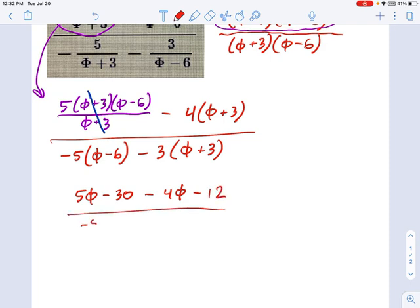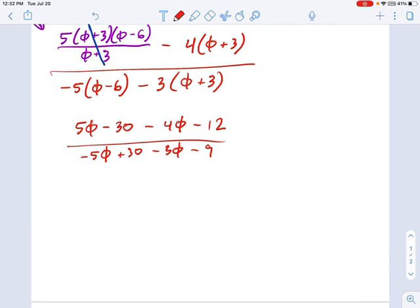The denominator is negative 5 phi plus 30, minus 3 phi minus 9. And we're collecting our terms together. So 5 phi minus 4 phi on the top is just a single phi. Negative 30 minus 12 is minus 42.